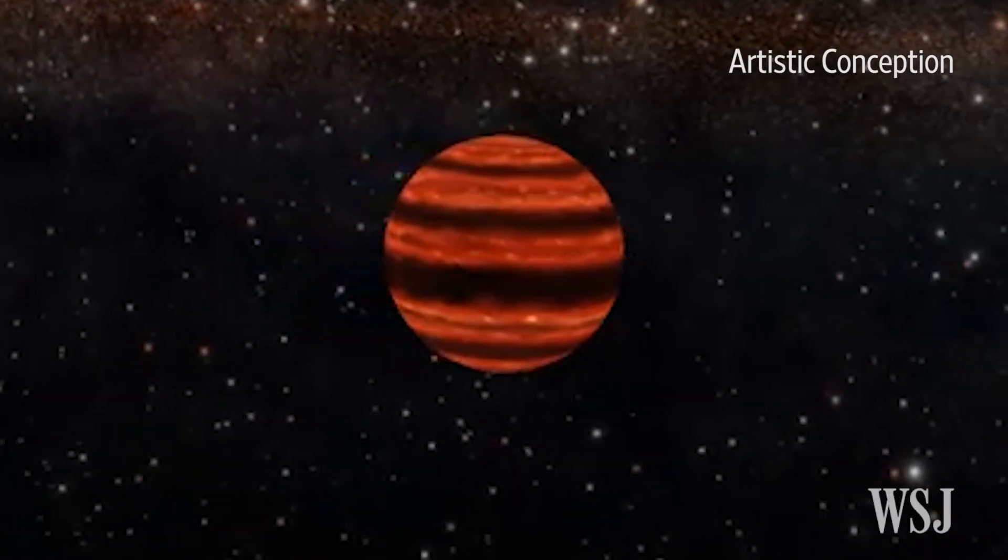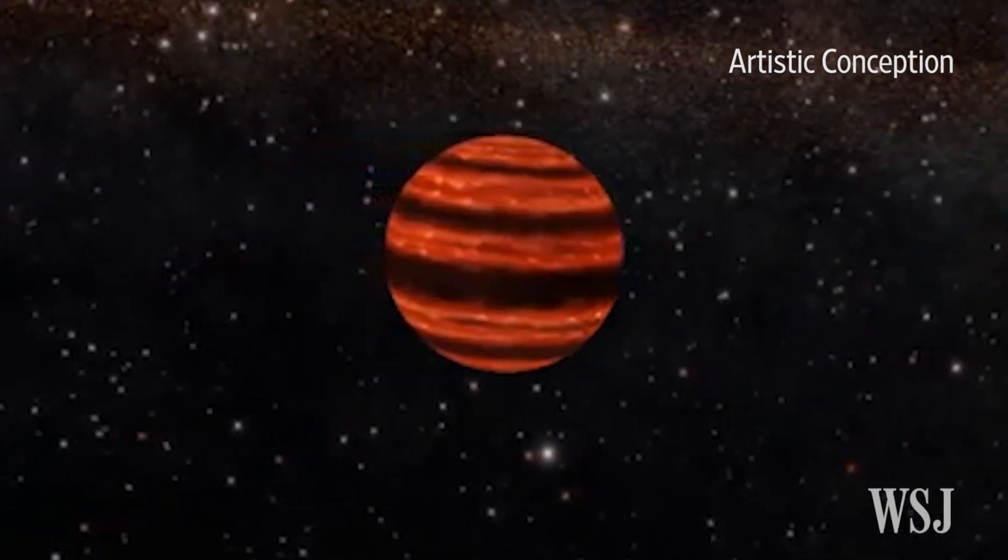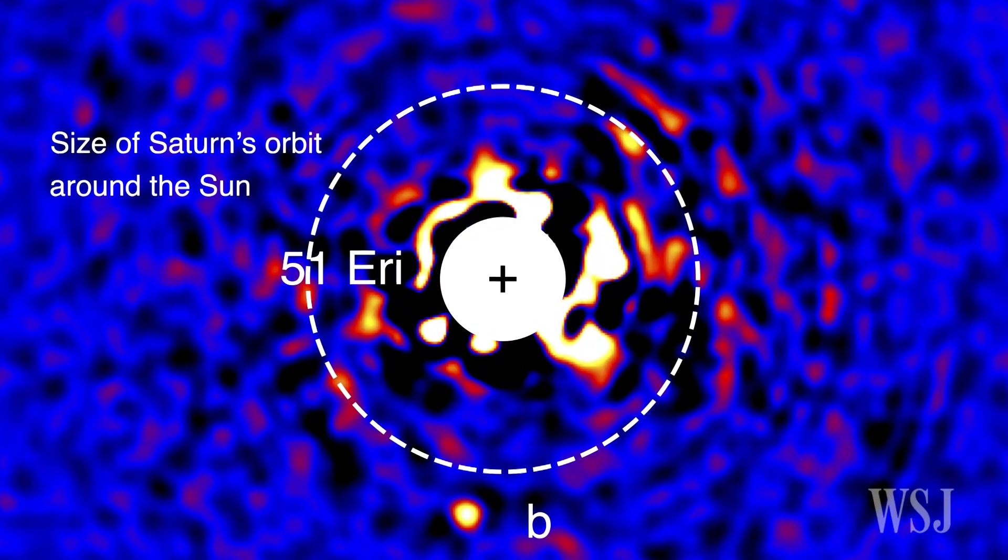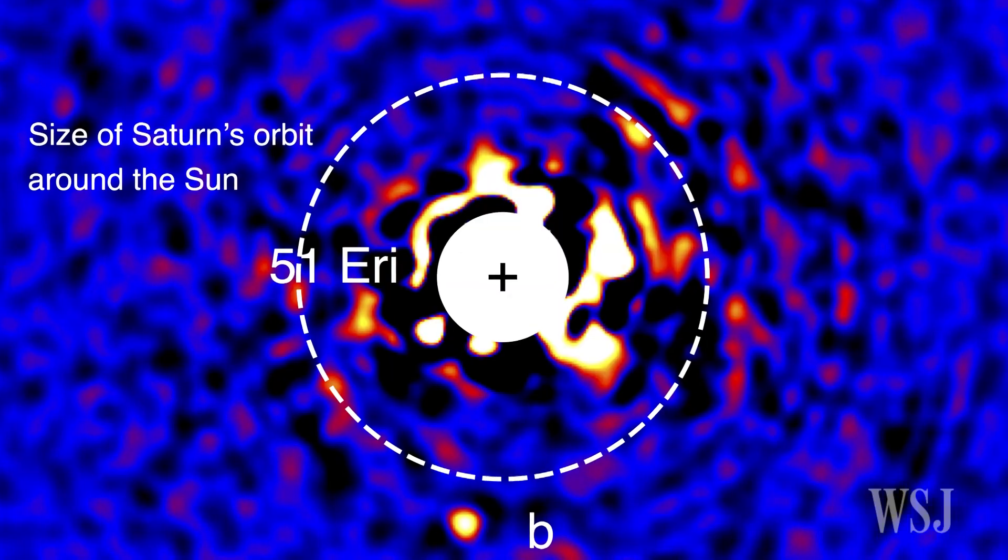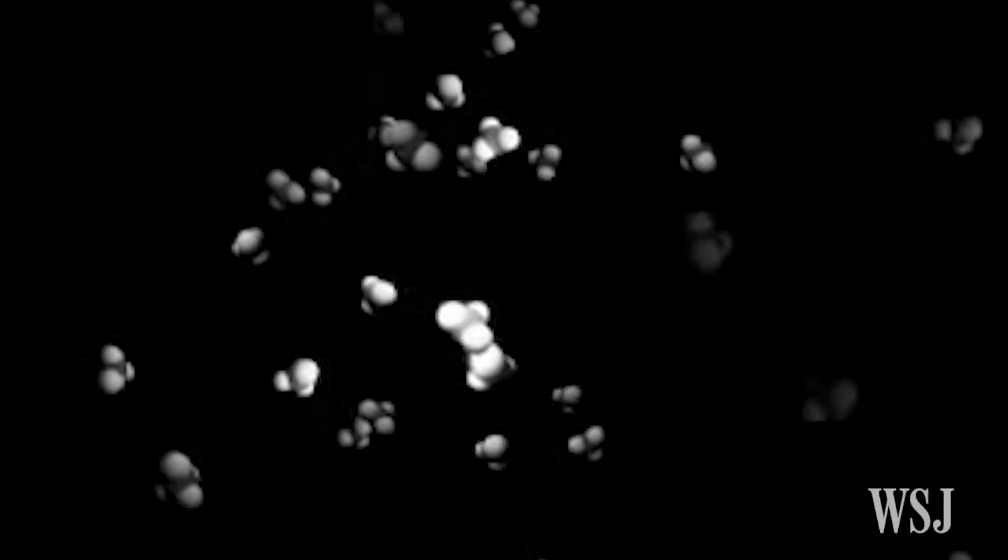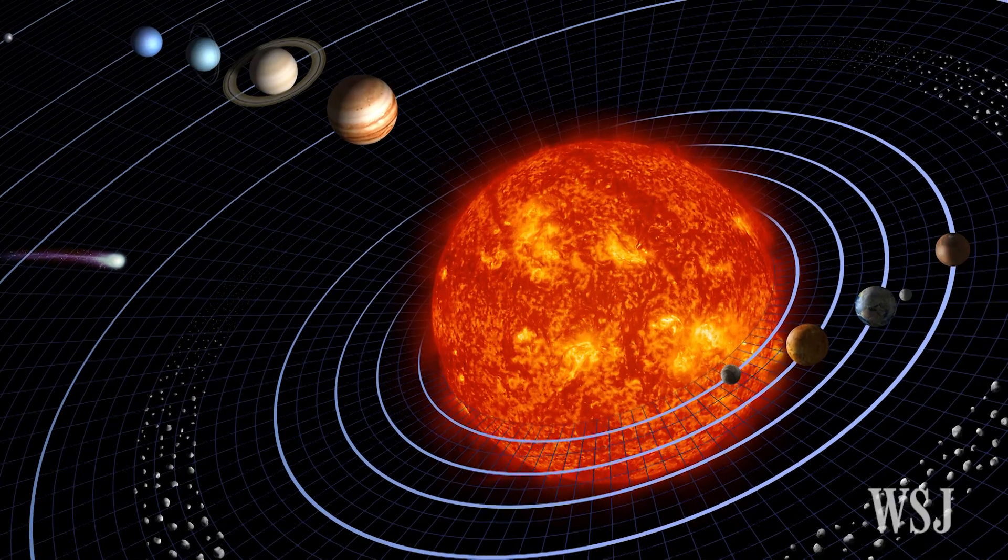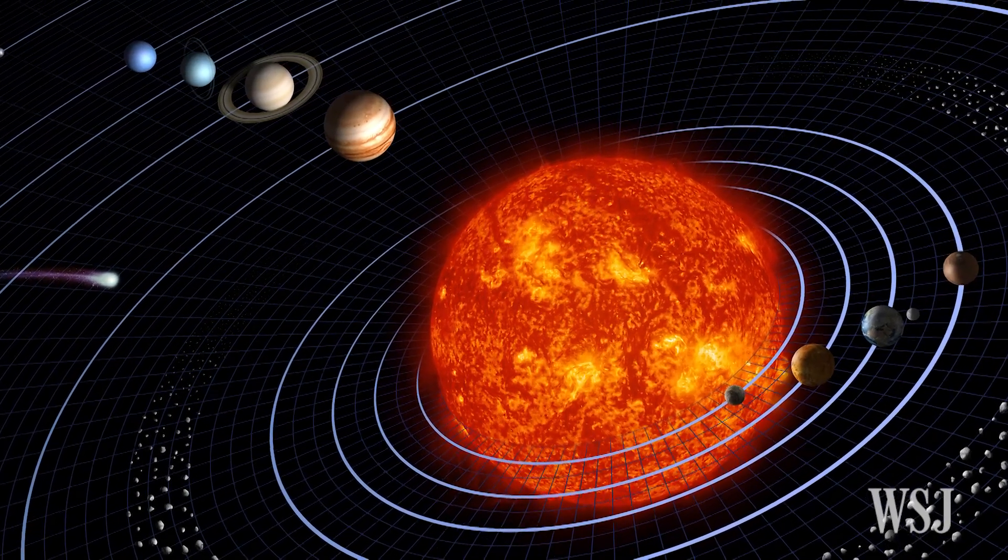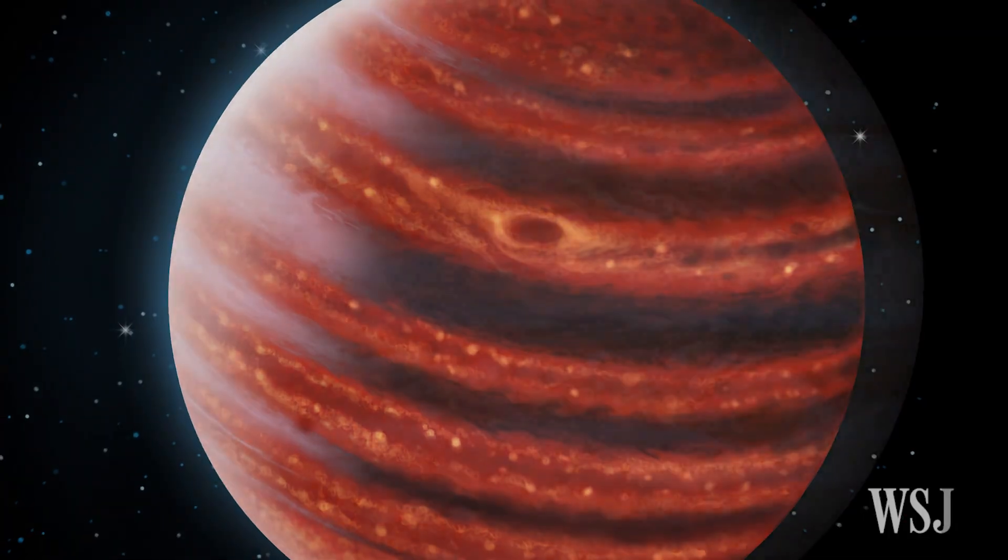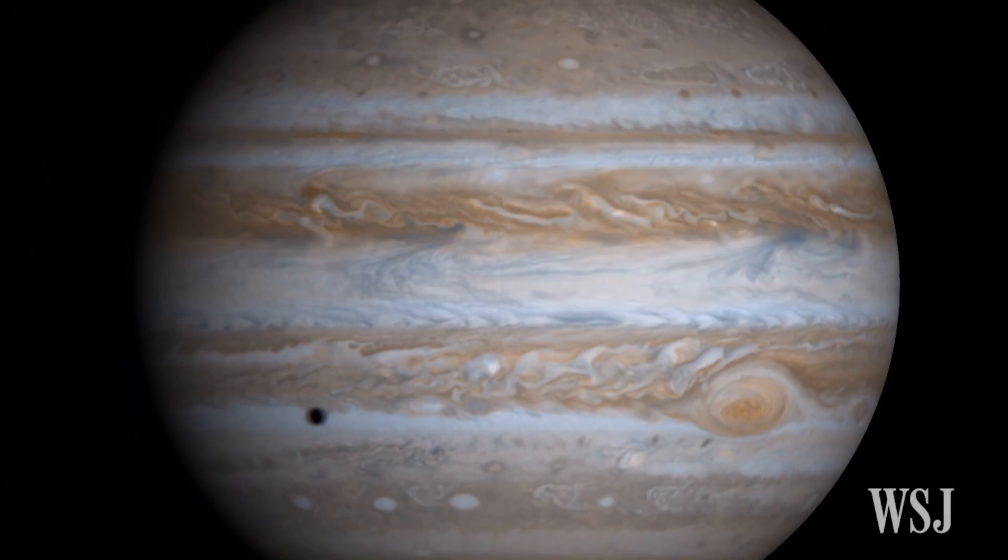Stanford University researchers say the planet is roughly twice the mass of Jupiter. It's estimated to have a temperature of around 800 degrees Fahrenheit and features the strongest atmospheric methane signal on record, making it much like the gas giants in our solar system. These characteristics suggest 51 Eridani was like Jupiter in its earlier development.